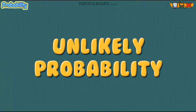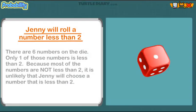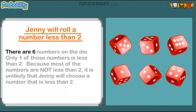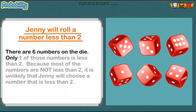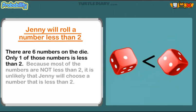Unlikely probability. Jenny will roll a number less than two. There are six numbers on the die. Only one of those numbers is less than two. Because most of the numbers are not less than two, it is UNLIKELY that Jenny will choose a number that is less than two.